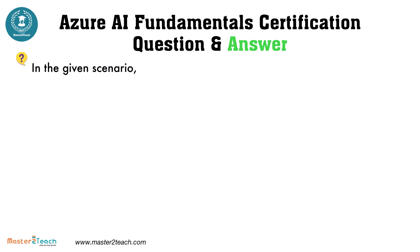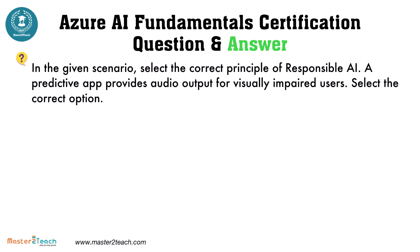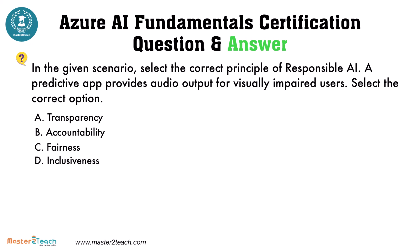In the given scenario, select the correct principle of Responsible AI. A predictive app provides audio output for visually impaired users. The options are: A. Transparency, B. Accountability, C. Fairness, D. Inclusiveness.